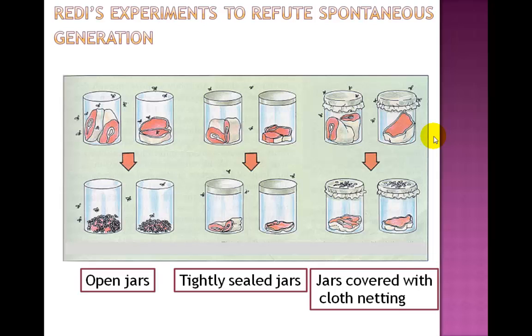So, the results that Redi obtained were exactly as he predicted. This experiment demonstrated that spontaneous generation could not produce large living creatures such as maggots, but what about the spontaneous generation of minuscule organisms?